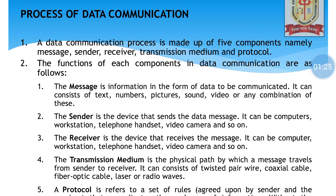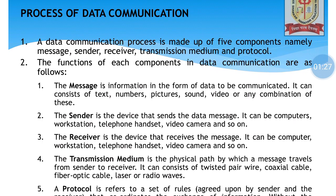For Data Communication, what are the components we require to transfer information from one computer to another? First of all, we require a message that needs to be sent from one computer to another for effective data communication, and that particular message could be audio, video, text, and so on. After that, we require this message to be sent from one device to another — one device will be the sender and the other will be the receiver.